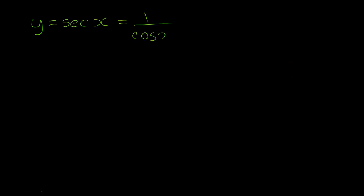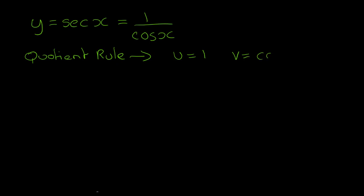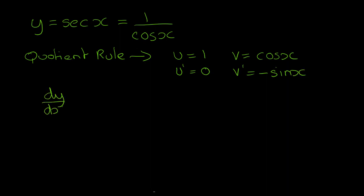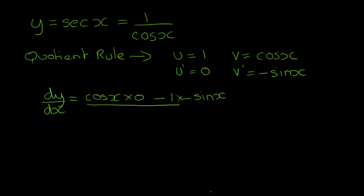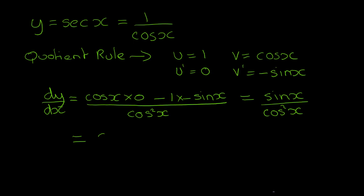We use the quotient rule again with u equals 1 and v equals cos x, so u dash is 0 and v dash is minus sine x. dy/dx will be cos x times 0 minus 1 times minus sine x, all over cos squared x. This equals sine x over cos squared x.